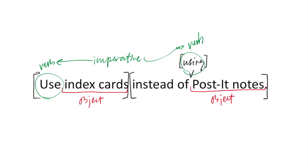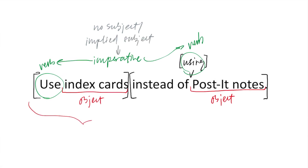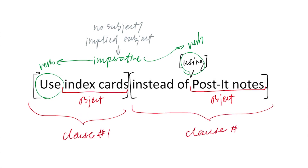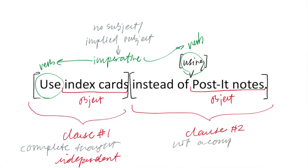So let's get back to our sample sentence: use index cards instead of post-it notes. We have a no-subject or implied subject here, and we have our two clauses. Clause number one — use index cards — constitutes a complete thought on its own, so we can say it's an independent clause. But the second one, instead of using post-it notes, isn't a complete thought, and therefore we can say it's a dependent clause. Now I want to make a point about how to punctuate independent and dependent clauses.